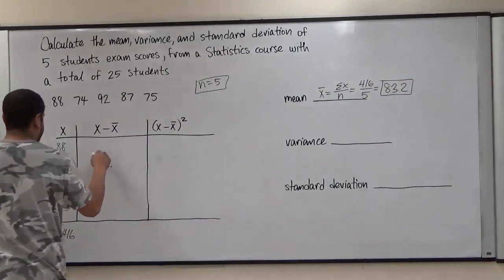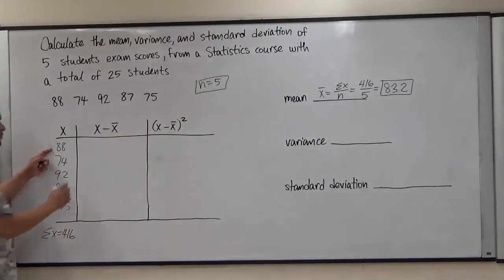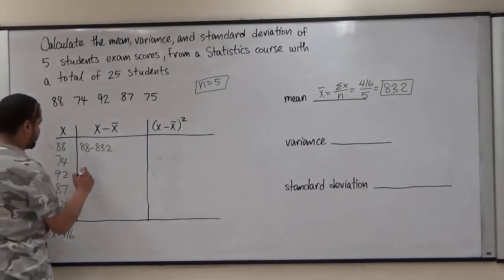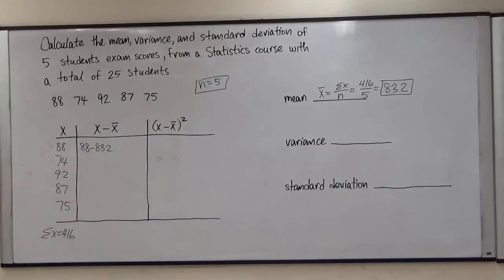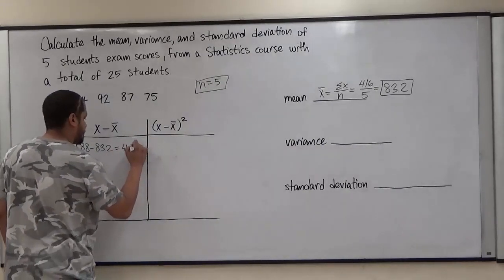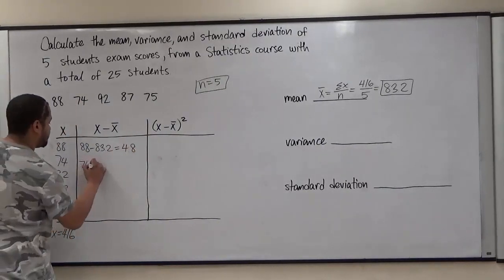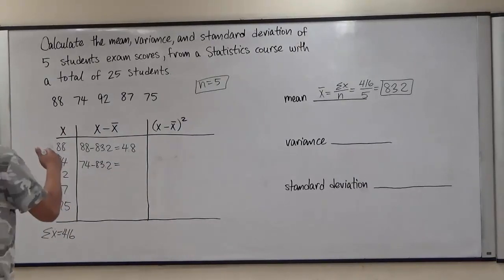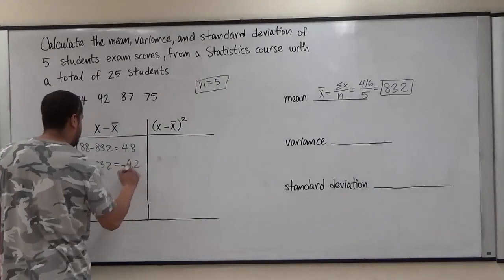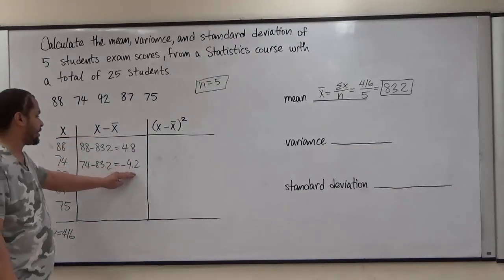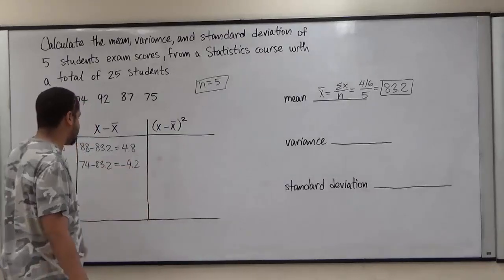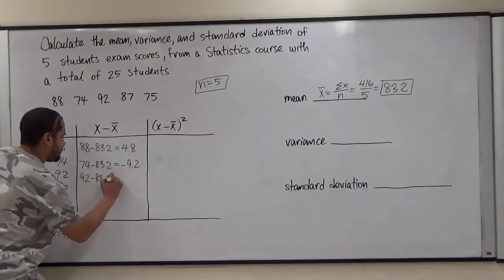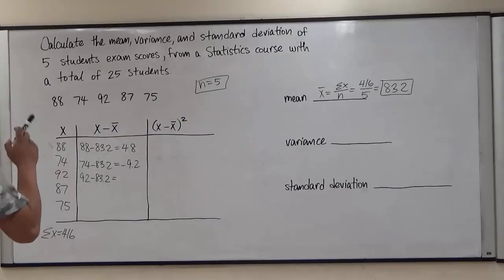Now that we have our mean, we go back to the second part of the chart and take each sample value and subtract the mean. So 88 minus 83.2 gives us 4.8. Next, 74 minus 83.2 gives us negative 9.2. Remember, when you're doing this and you get negative values, we can almost disregard these — I'll continue talking about this when we get to the third part of the chart.